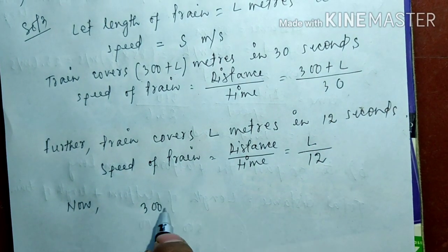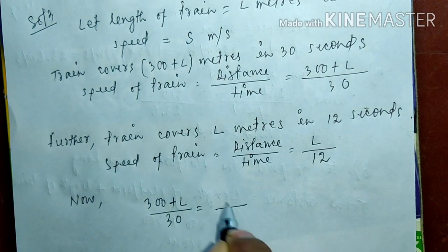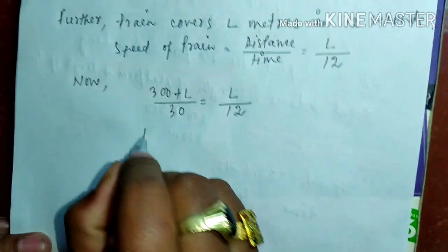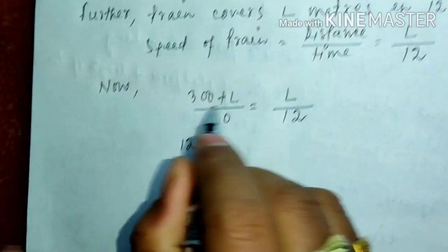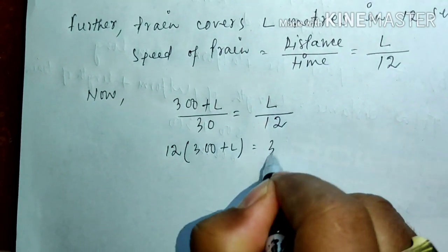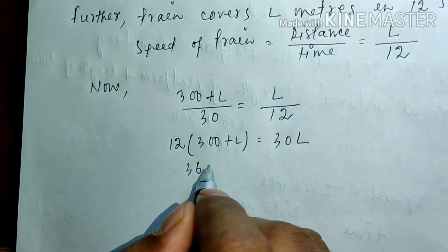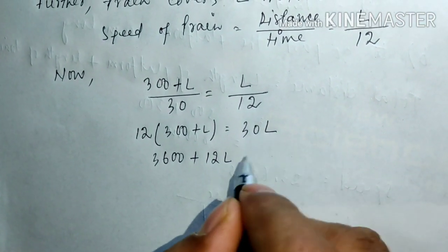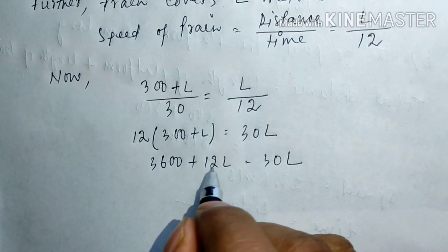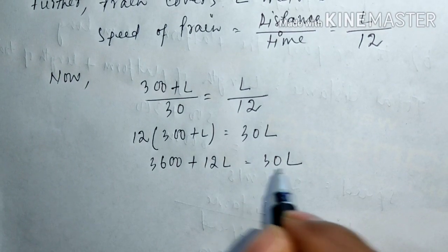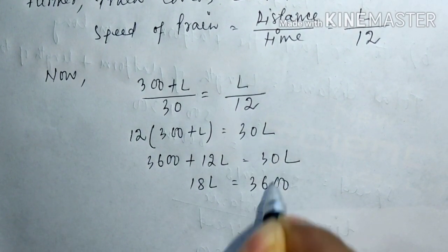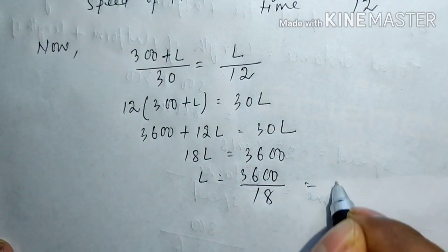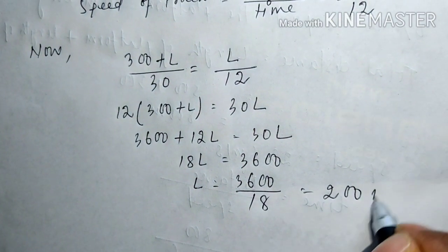Since both expressions equal the same speed, we set them equal: (300 plus L) divided by 30 equals L divided by 12. Cross-multiplying: 12 times (300 plus L) equals 30L, giving 3600 plus 12L equals 30L. Rearranging: 30 minus 12 is 18L equals 3600, so L equals 3600 divided by 18, which is 200 meters.